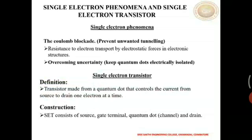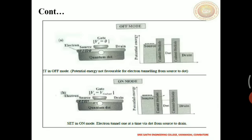Now let us see about its construction. A single electron transistor consists of a source, gate, quantum dot, and a drain. The figure A on the left side represents the construction of a single electron transistor which has a source and drain separated by a quantum dot. The current flows in two ways: one from source to dot, and next from dot to drain. A gate is attached at the top through a capacitor, and it is used to control the charge.